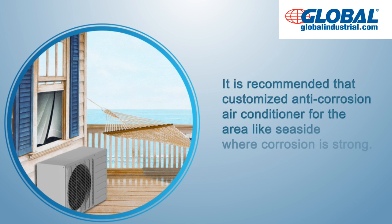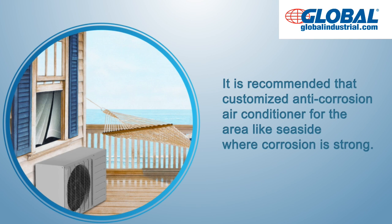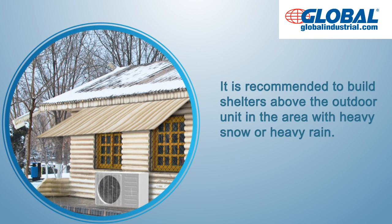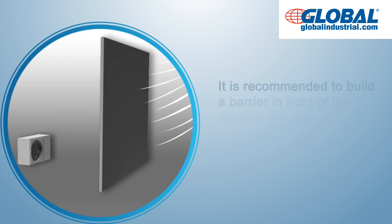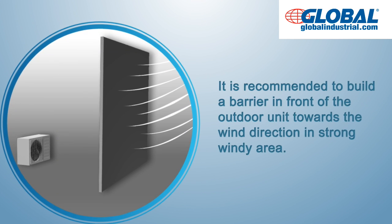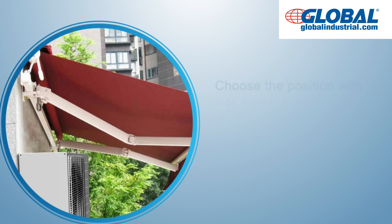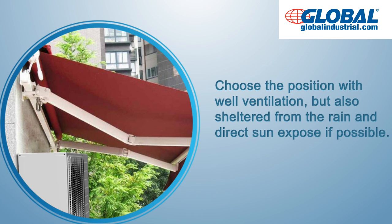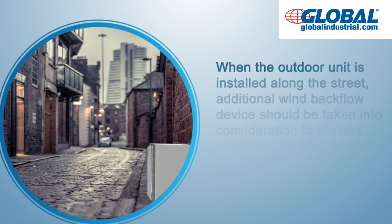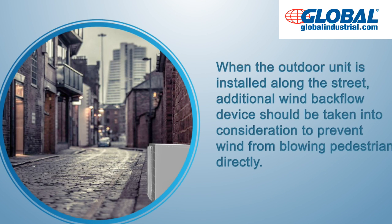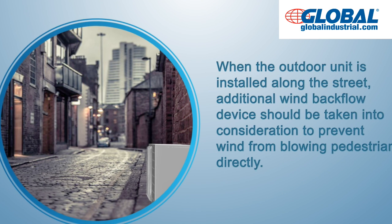It is recommended to use a customized anti-corrosion air conditioner for areas like seaside where corrosion is strong. It is recommended to build shelters above the outdoor unit in areas with heavy snow or heavy rain. It is recommended to build a barrier in front of the outdoor unit towards the wind direction in strong windy areas. Choose a position with well ventilation but also sheltered from rain and direct sun exposure if possible. When the outdoor unit is installed along the street, an additional wind backflow device should be taken into consideration to prevent wind from blowing pedestrians directly.